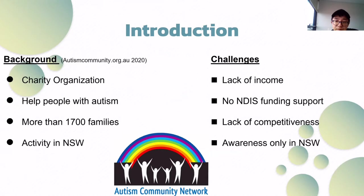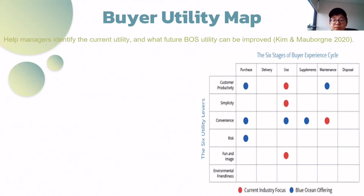With an overview of the ACN background and challenges, let's return to the study of the Blue Ocean Strategies. Basically, the buyer utility map is one of the most useful BOS tools to help managers identify which utility modules are currently available and which are going to be available through the Blue Ocean Strategies in the future.